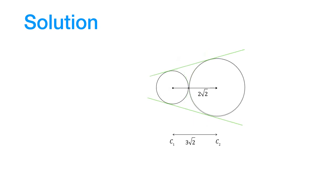So circle c2 can expand to intersect with circle c1 like this. Under this condition the radius of circle c2 would be greater than 2 times the square root of 2. So let's write that.